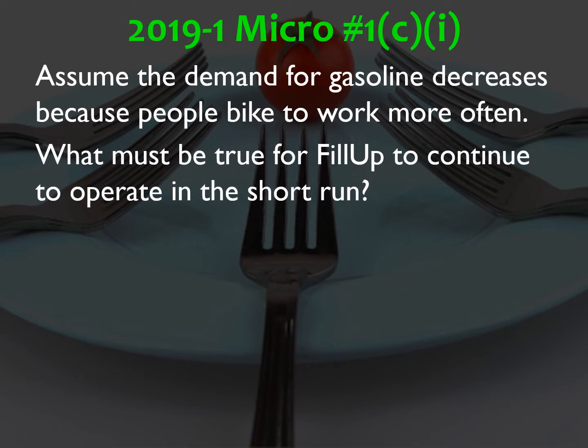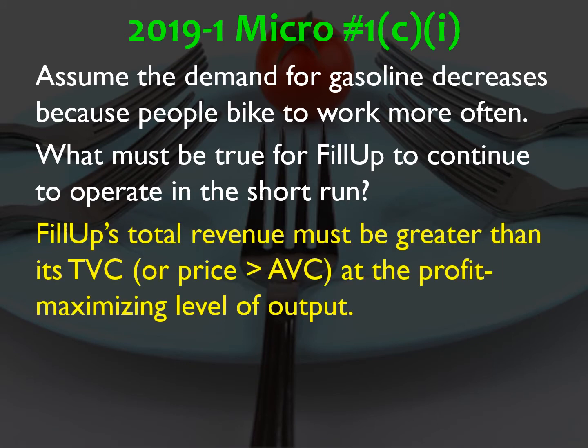Part C: assume the gas demand decreases because people bike to work more often — what must be true to continue to operate in the short run? This is the shutdown rule. Total revenue has to be greater than total variable cost, or price has to be greater than average variable cost at the profit maximizing level of output. If the losses from producing are greater than the total fixed cost, you're better off shutting down and limiting your losses to the total fixed cost.